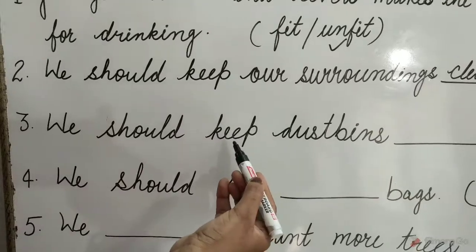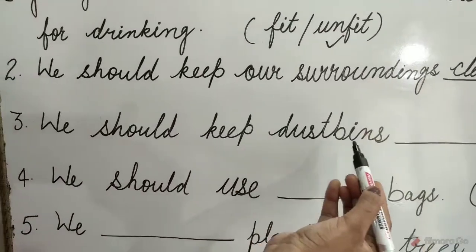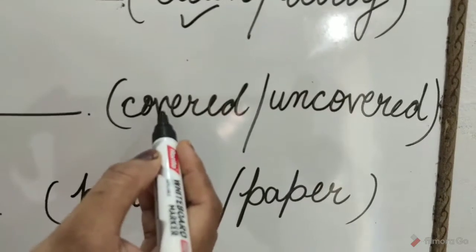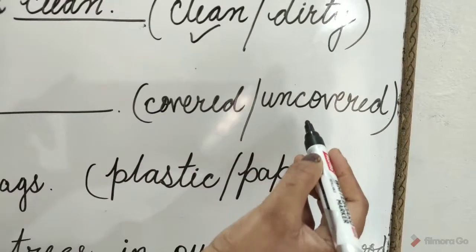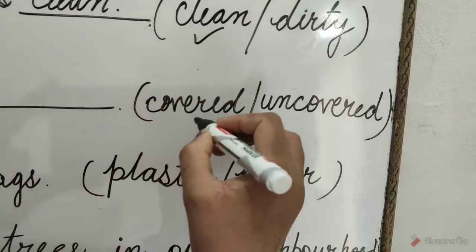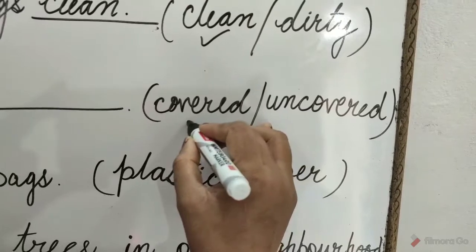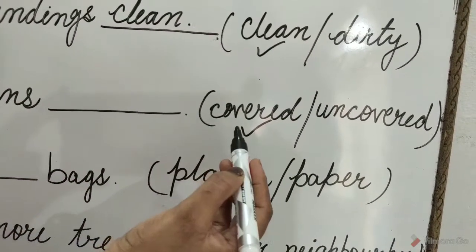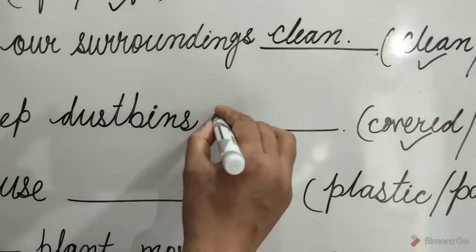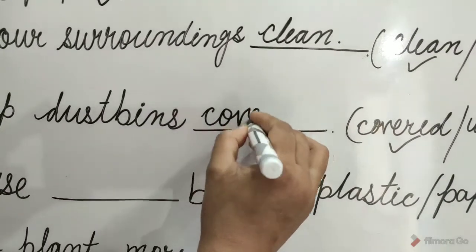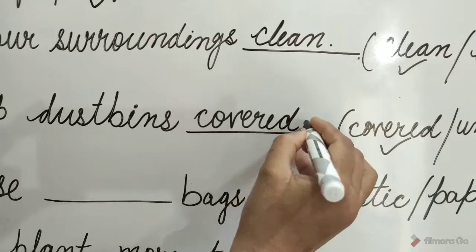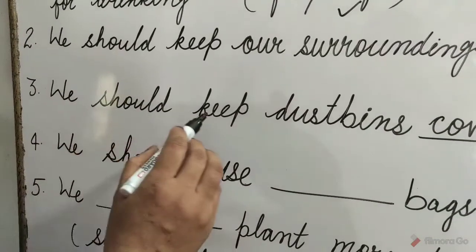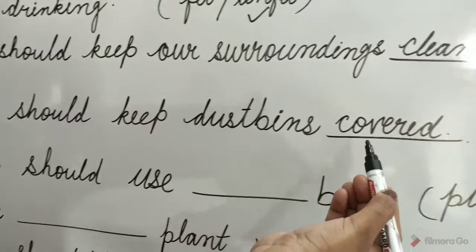Question 3: We should keep dustbins dash. The options are 'covered' and 'uncovered'. The 'covered' option is correct. So tick on 'covered' and write here. We should keep dustbins covered.